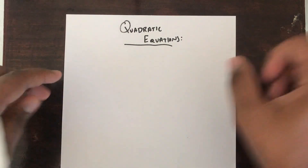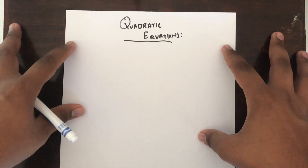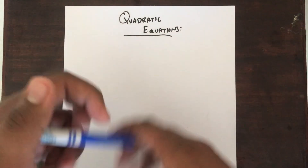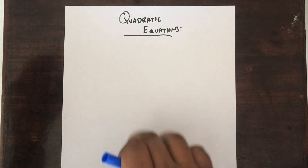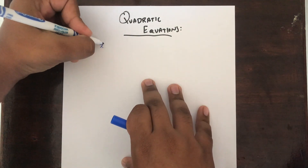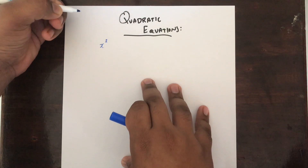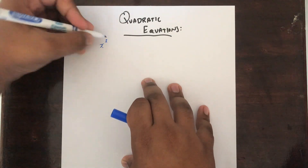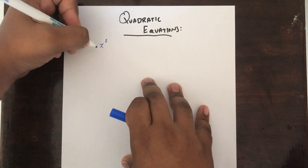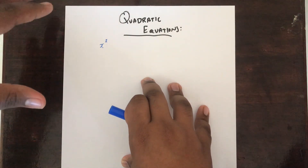Today we will be learning how we can solve quadratic equations. So what's a quadratic equation? A quadratic equation is an equation where you have x as the variable and it has the second power. So anything which you see with x power 2 is a quadratic equation.